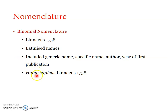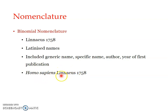Each species is given a double name made up of the genus name (generic name) and the specific name. Together they form the species name — for example, Homo sapiens. The species name is Homo sapiens, while 'sapiens' alone is the specific name and 'Homo' is the generic name. A binomial nomenclature always includes the name of the person who first scientifically studied and published details of that species. Homo sapiens was named by Linnaeus in 1758.